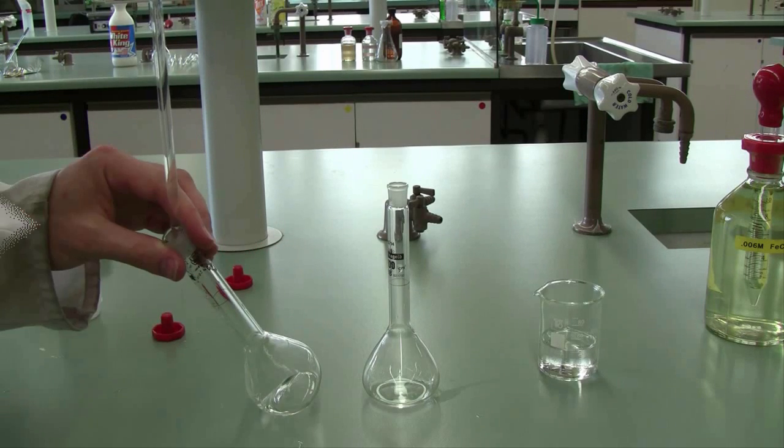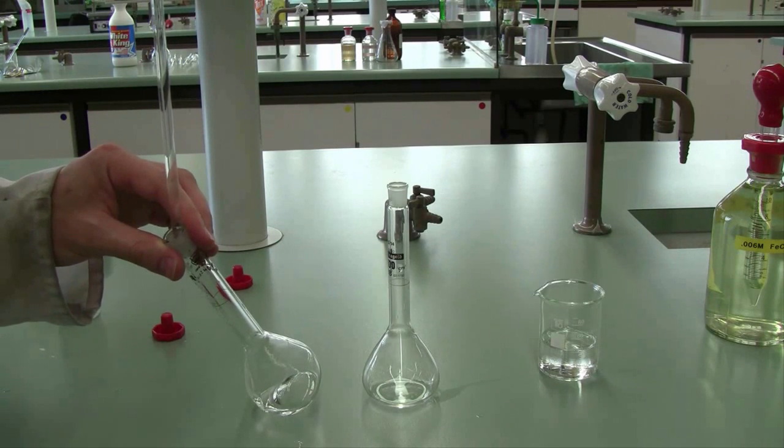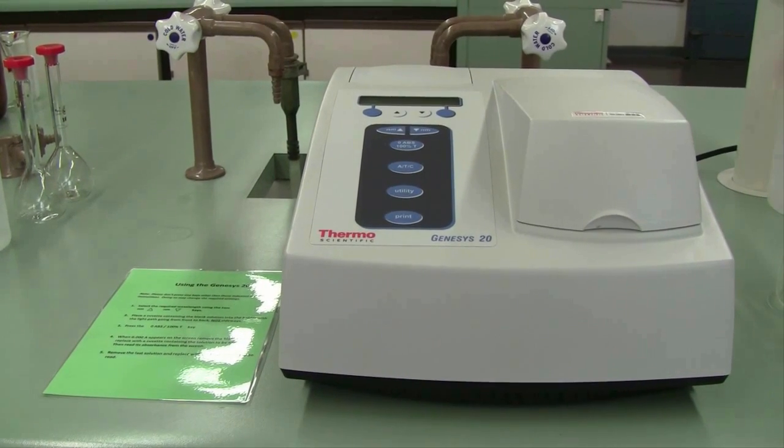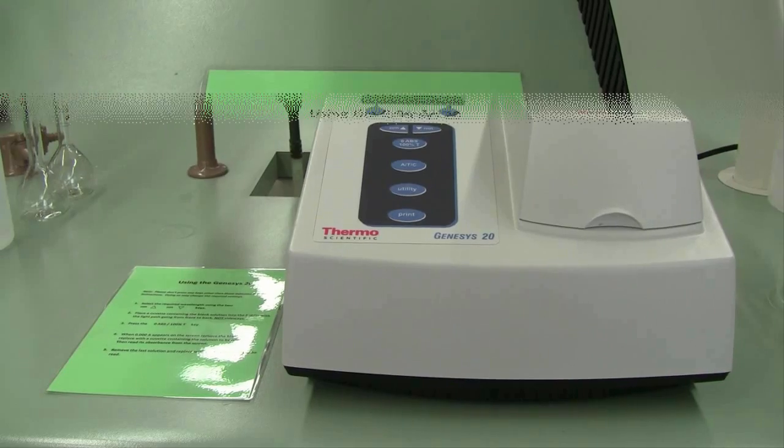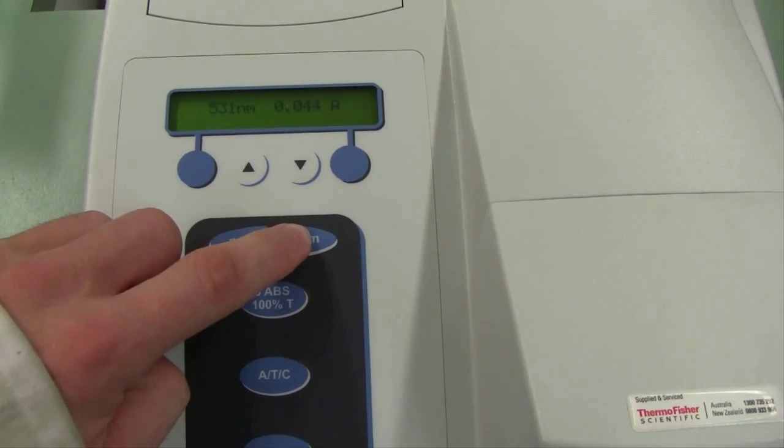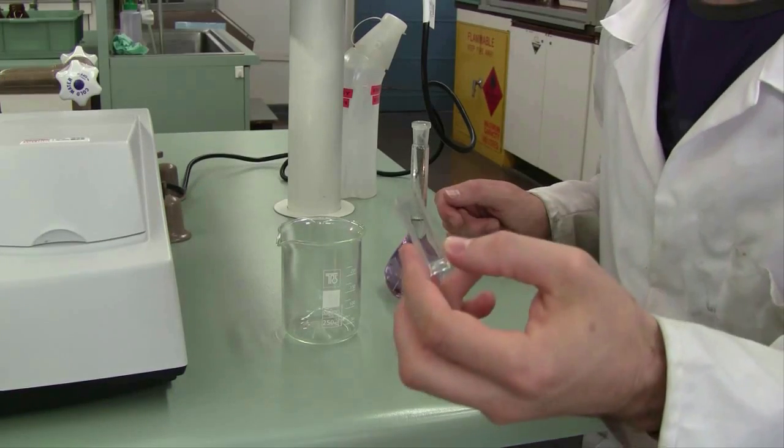Once all of your solutions are prepared, it's time to go to the UV-visible spectrophotometer to measure the absorbance of your samples. An instruction sheet is provided. Begin by adjusting the wavelength of your instrument. The first sample you'll need to measure is the blank, and then go from lowest concentration to highest concentration.